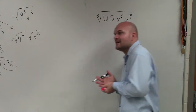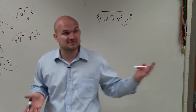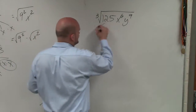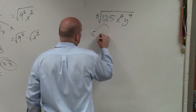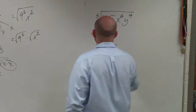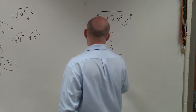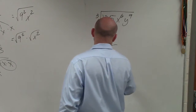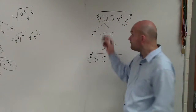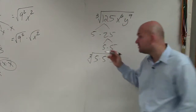Now, as far as 125, if you don't already know what number multiplied by itself three times gives you 125, then you would want to break it down using factoring, which would be 5 times 25, 5 times 5. So the cube root of 125 prime factorized will be 5 times 5 times 5. Therefore, the cube root of 125 is just going to be 5.